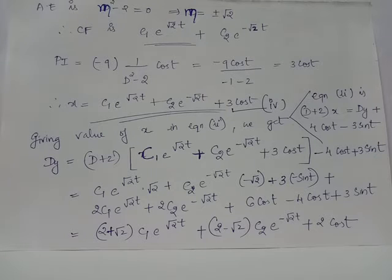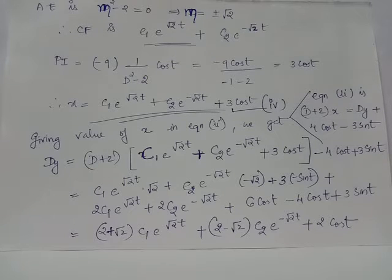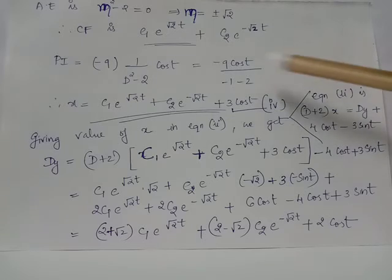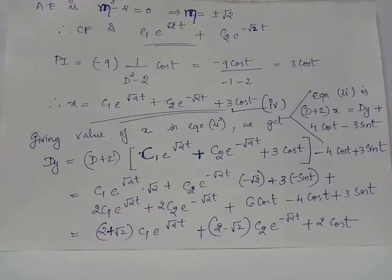To find the particular integral, we apply 1/f(D) to the RHS, which is -9cos(t). The constant -9 is taken outside, leaving 1/(D² - 2) acting on cos(t). Since cos(t) is trigonometric with coefficient 1 on the independent variable, we replace D² with -1², making the denominator -1 - 2 = -3. Thus -9/(-3) = 3, and the particular integral is 3cos(t).